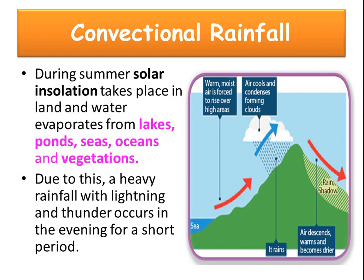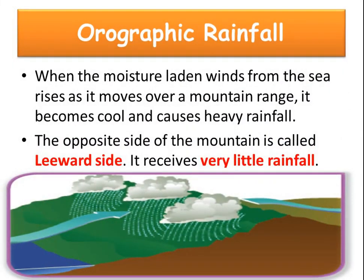We will see what is orographic rainfall. When moisture-laden winds from the sea rise as they move over a mountain range, they become cool and cause heavy rainfall. The opposite side of the mountain is called the leeward side, and that side receives very little rainfall. Such kind of rainfall is called orographic rainfall.